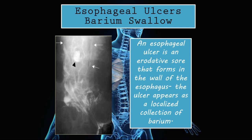Esophageal ulcers on barium swallow: an esophageal ulcer is an erosive sore that forms in the wall of the esophagus, and the ulcer appears as a localized collection of barium. This barium swallow X-ray is of a patient who suffers with esophagitis due to chronic reflux, which is one of the major causes of esophageal ulcers.